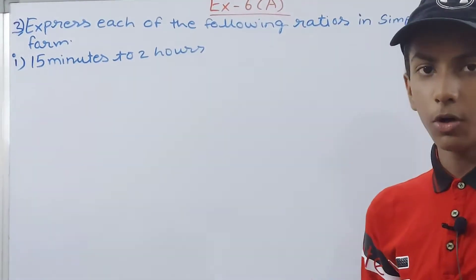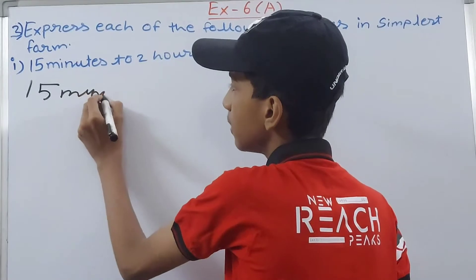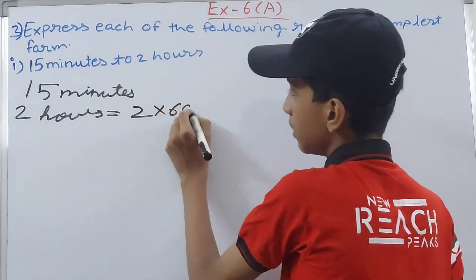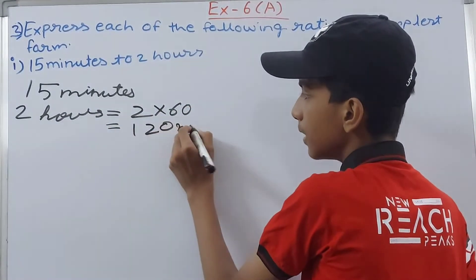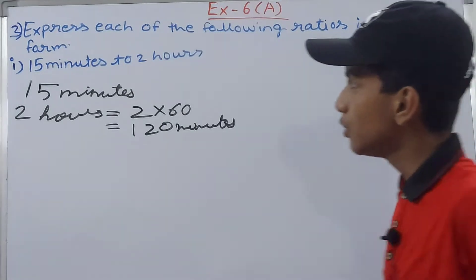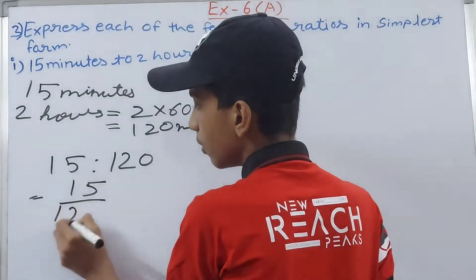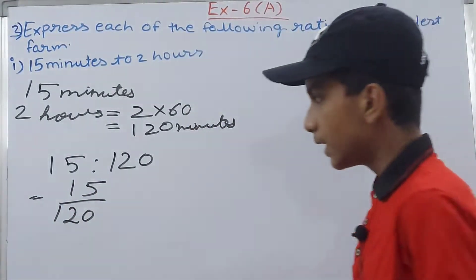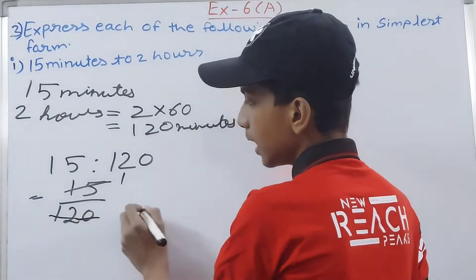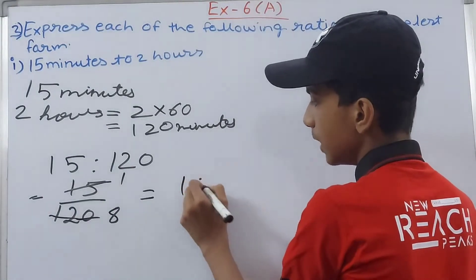So 15 minutes will be as it is, and 2 hours becomes 2 into 60, which is 120 minutes. Now we make the ratio: 15 is to 120. Convert this into a fraction and solve it. We can simplify this - 15 goes into 120 eight times. So we have 1 is to 8. This becomes our answer.